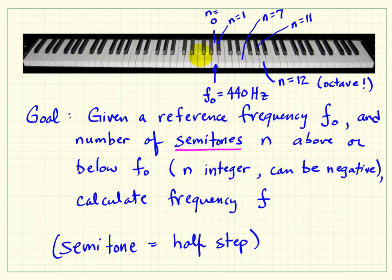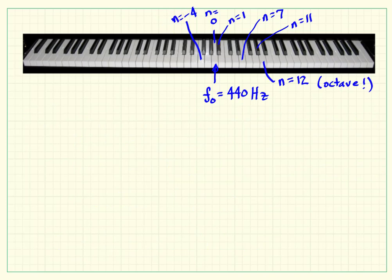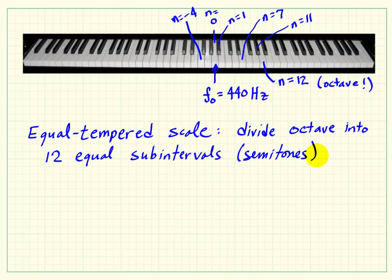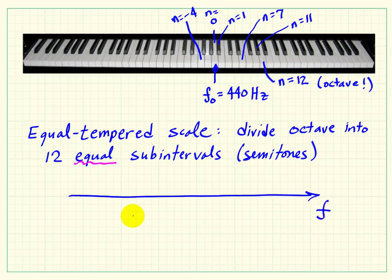The concept of equal temperament is to take the octave and divide it equally among these 12 semitones. A negative value for N simply moves us down to a lower frequency. So we define our octave into 12 equal subintervals, or semitones, also called half steps.